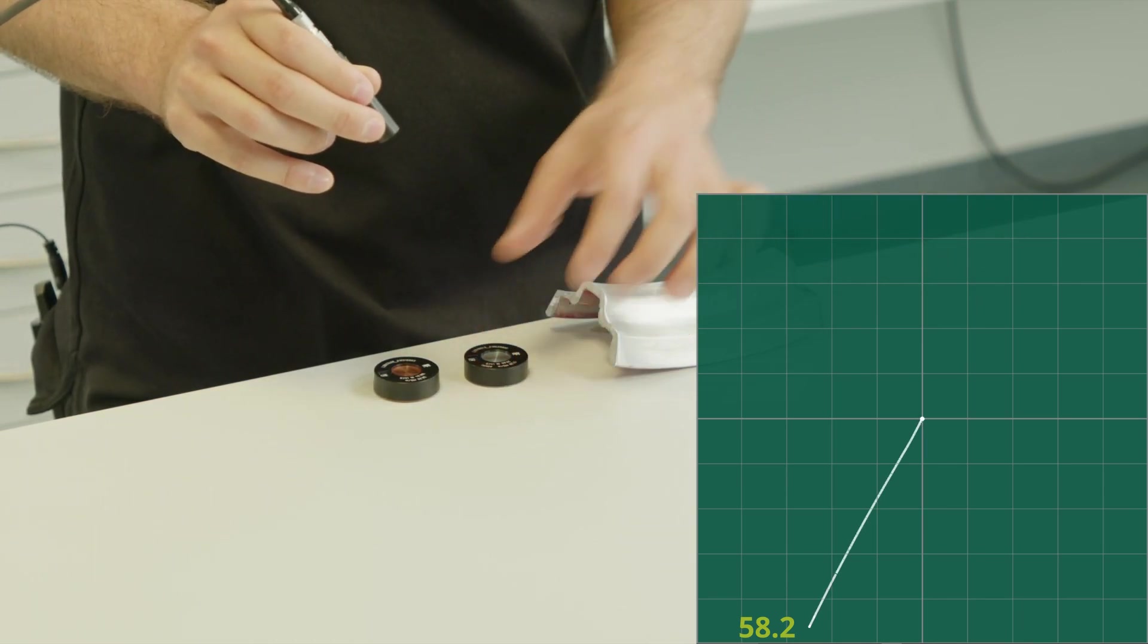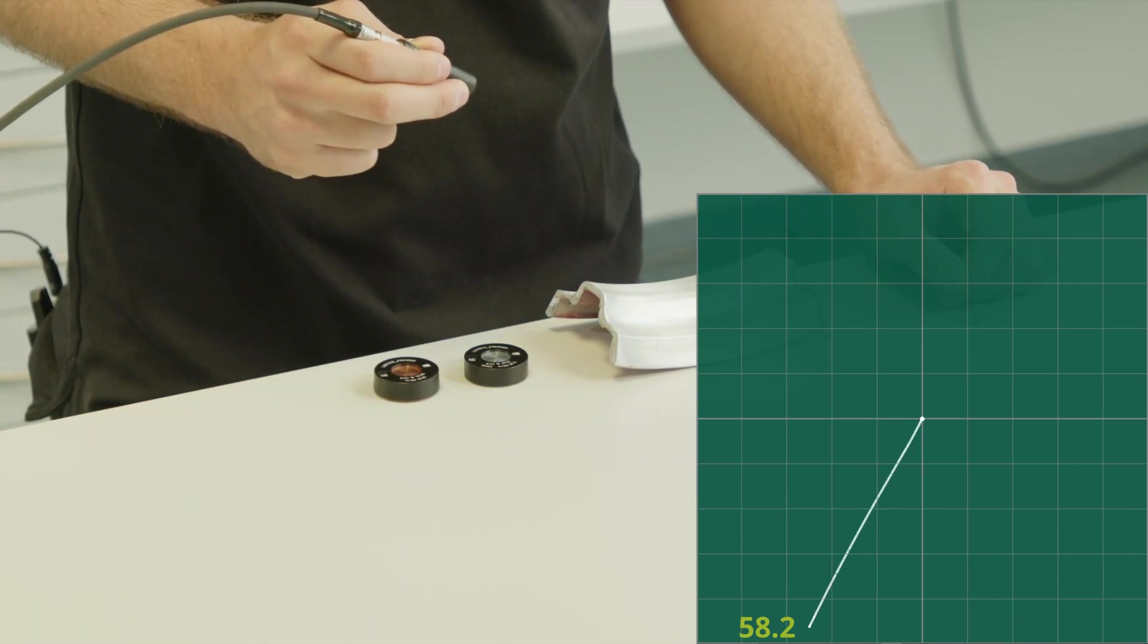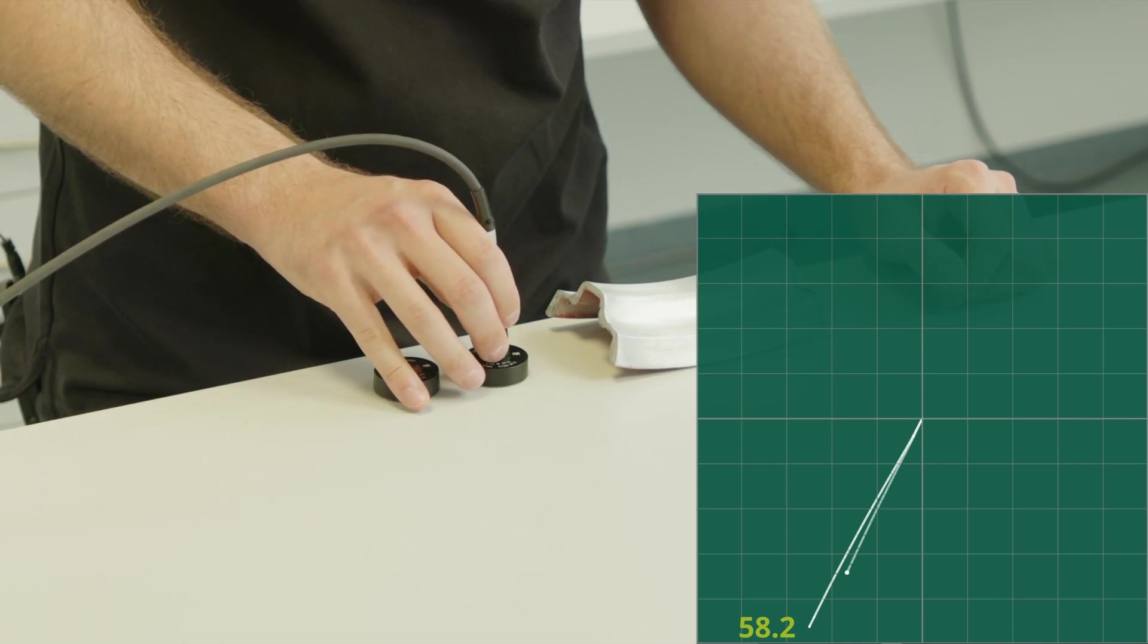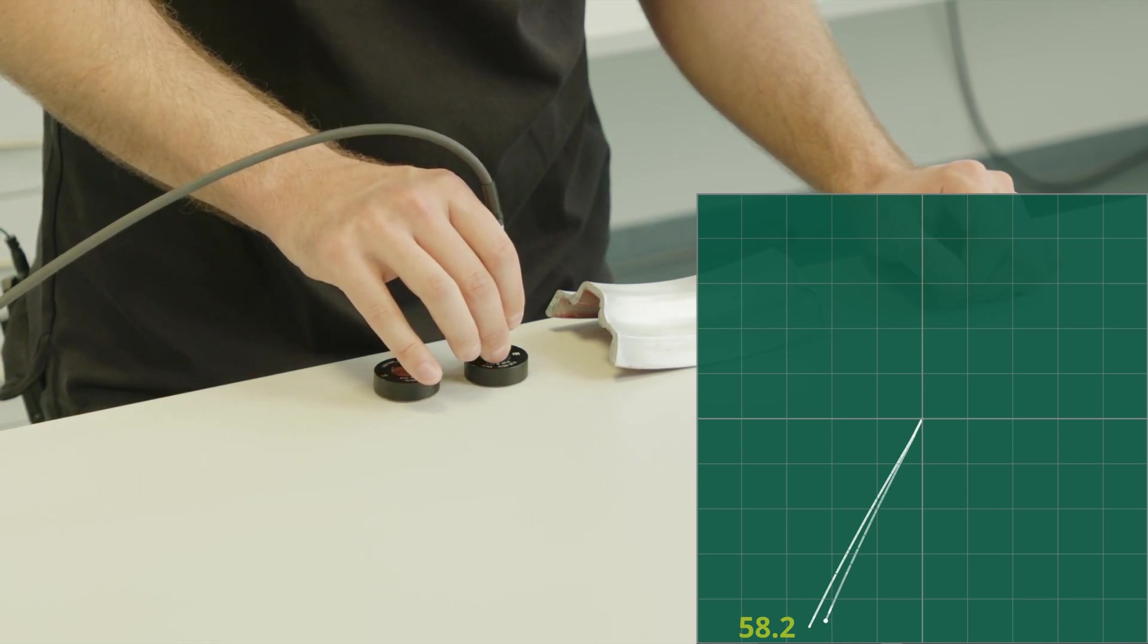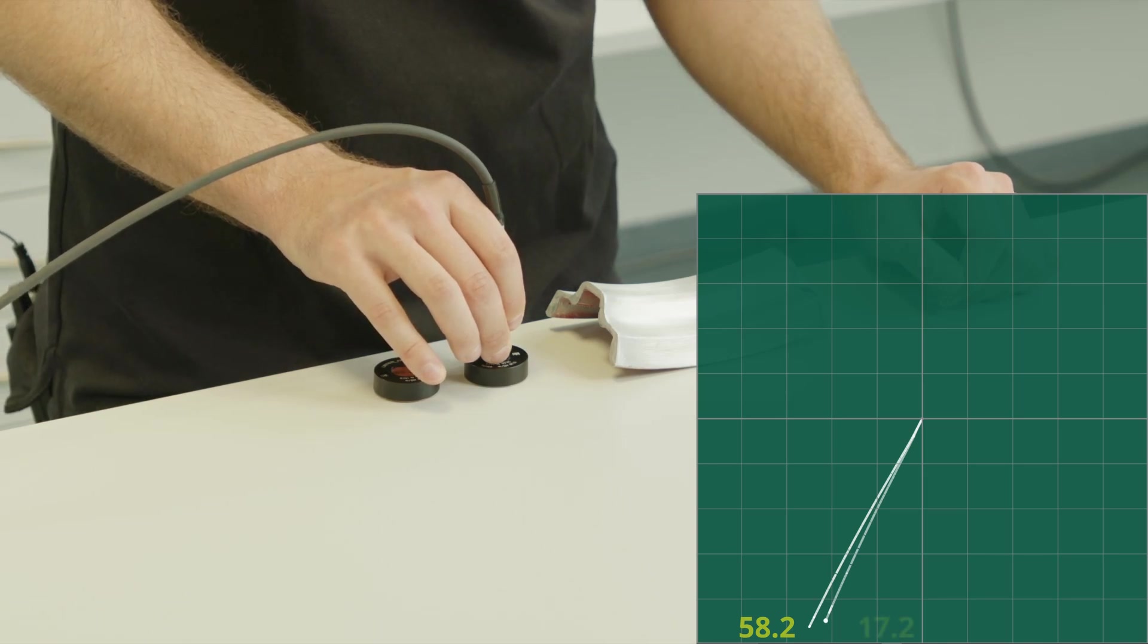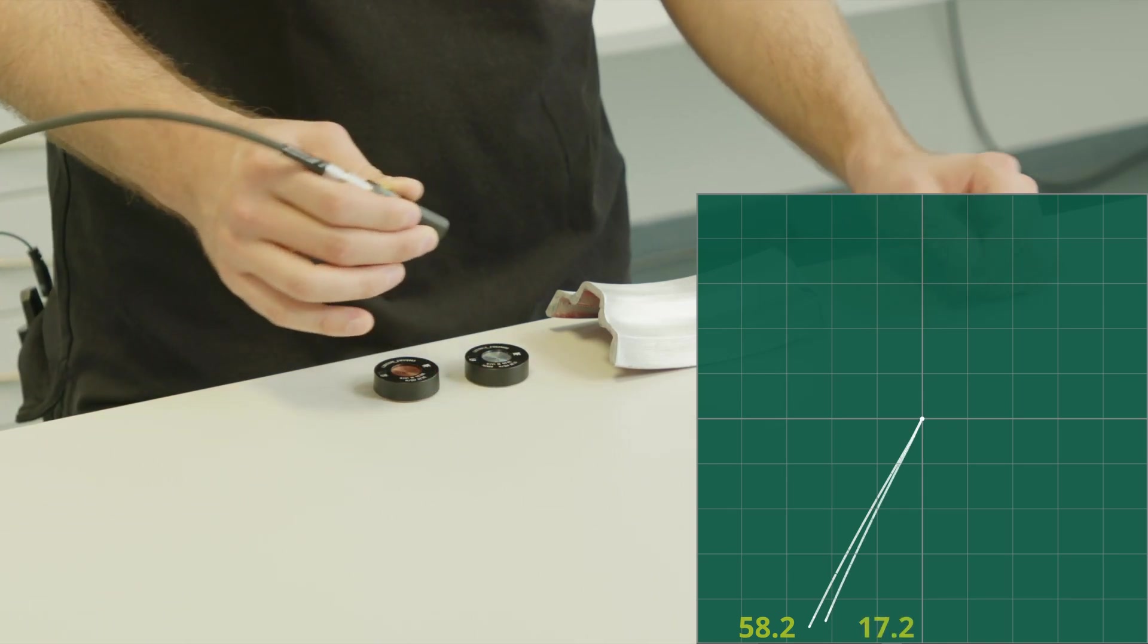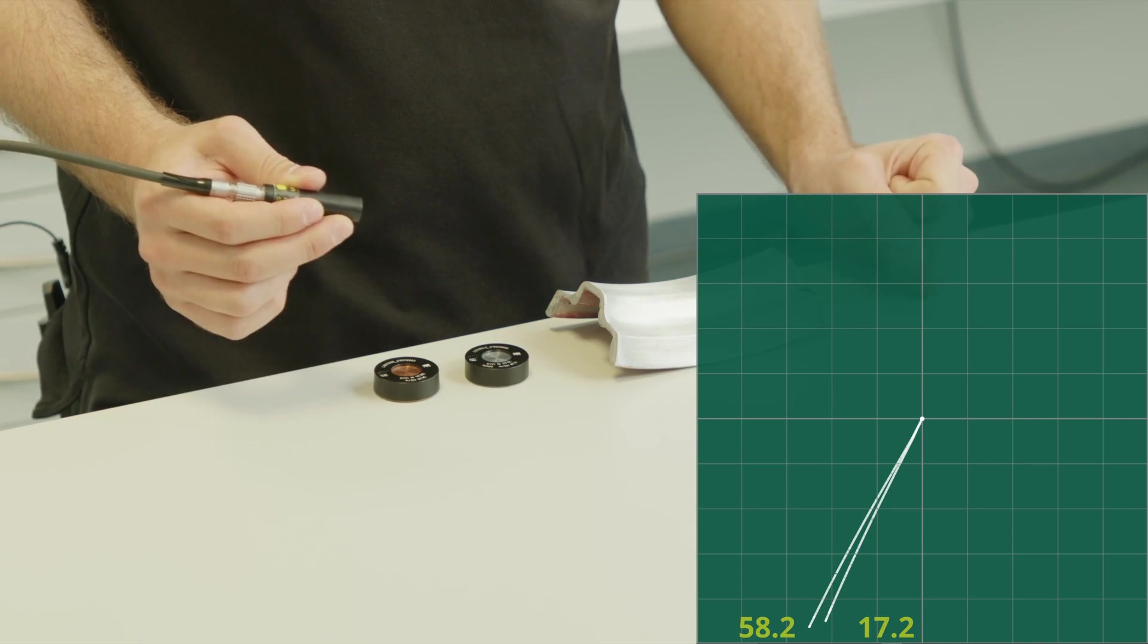And we have a standard from aluminium with 17.2 Megasiemens per meter. Put the probe on the standard and we see the signal. If we now connect both standard lines together, then we have a calibration.